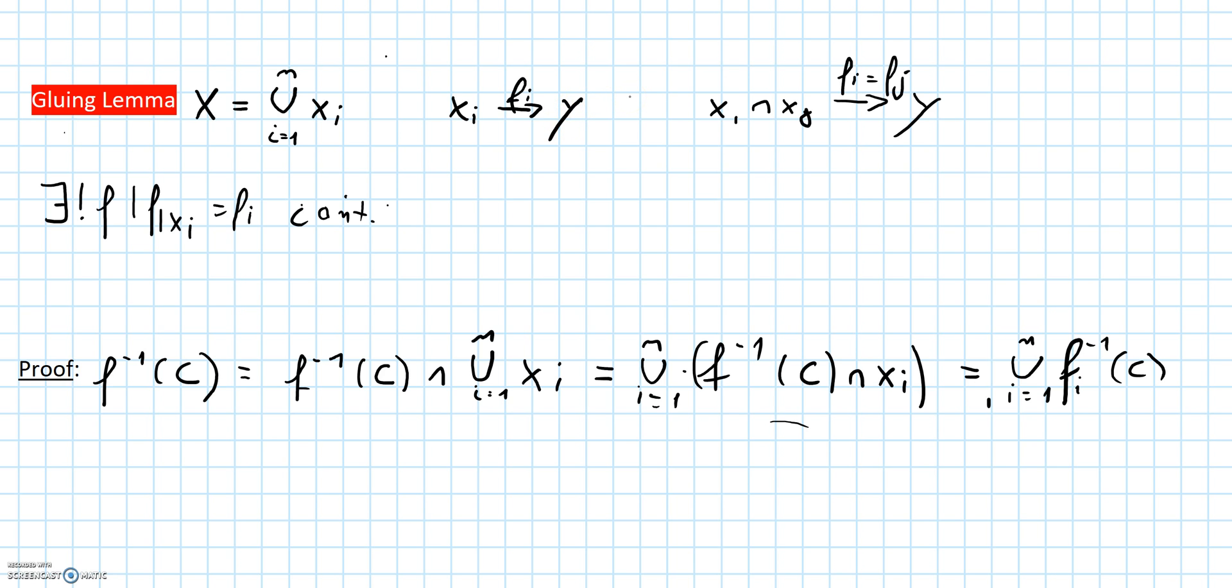And further suppose that these maps are the same on the intersections. This means that if you intersect xi with xj, then fi should be the same as fj on this intersection. And if all of this is true, you have the following statement which is the gluing lemma.